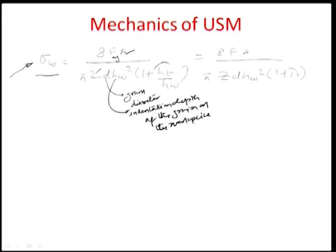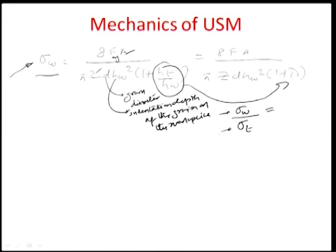The parameter lambda is the ratio of the ultimate flow stresses of the workpiece to the tool. The ultimate yield stress is inversely proportional to the indentation depth. So sigma_w by sigma_t, the ratio of workpiece to tool yield stress, equals the inverse ratio of indentation depth of tool to workpiece, and this is defined as lambda, which enters this equation.